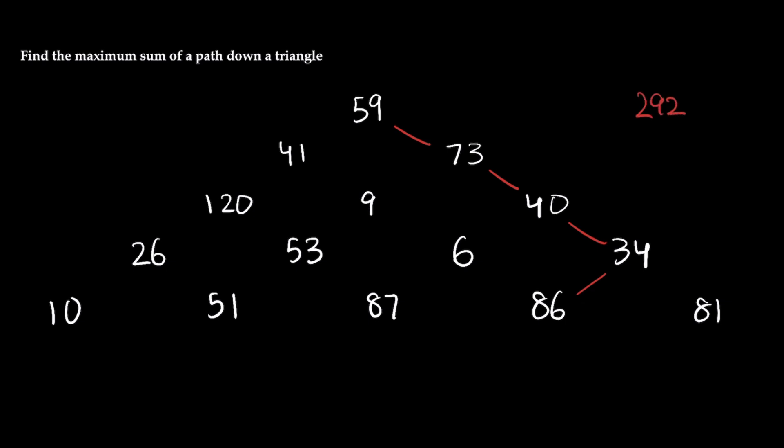Well what if I told you that there was actually a larger sum and that sum is actually going to be acquired by going through the path 59, 41, 120, 53 and then 87. And it seems to defy our original strategy because we always thought that we should pursue the best option at each step. But the issue here was that when we went from 59 to 73 we neglected to see that the 120 all the way on the left would have a significant impact on our maximum sum.